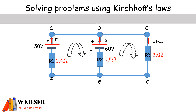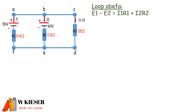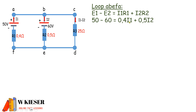For loop A, B, E, F, A, we're going to have EMF1 minus the second EMF because it is opposing the clockwise direction, and that is equal to I1 times R1 plus I2 times R2. Substituting values: 50 volts minus 60 volts equals 0.4 multiplied by I1 plus 0.5 multiplied by I2. Simplifying this, equation 1 is: negative 10 equals 0.4 I1 plus 0.5 I2.